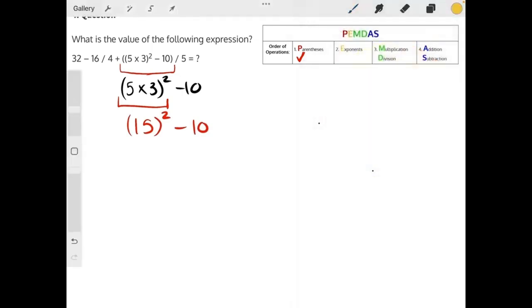Our next step would be exponents. 15 squared, or 15 times 15, would give us 225, and that minus 10 is still there.